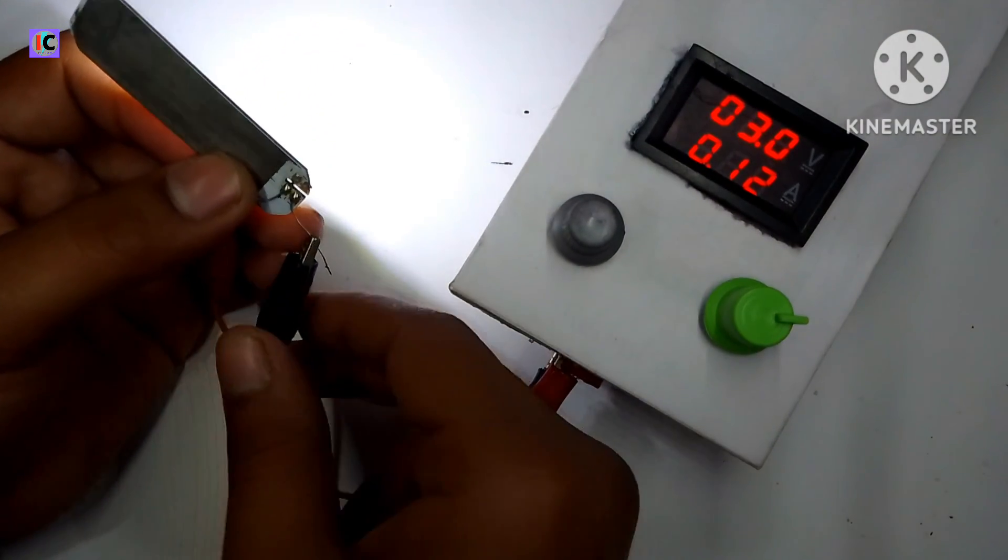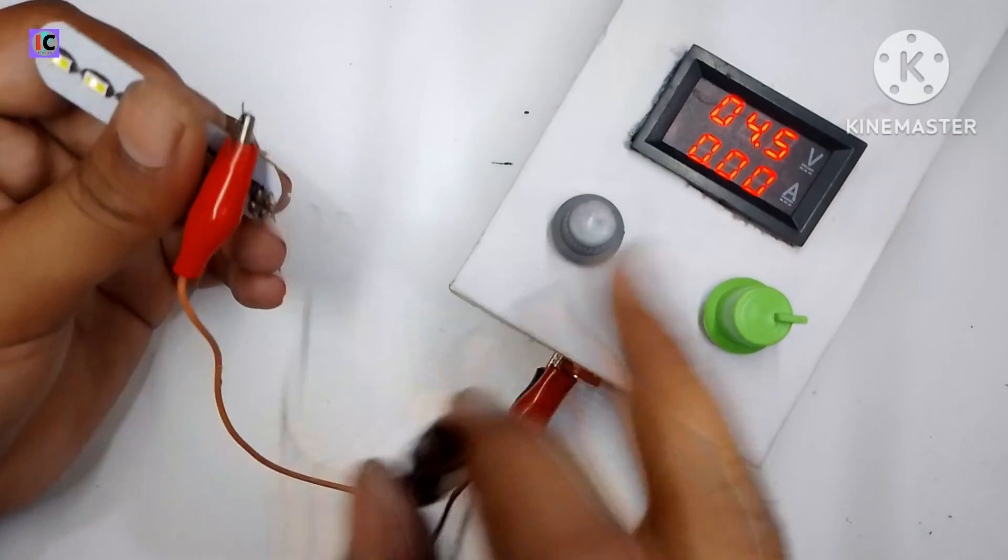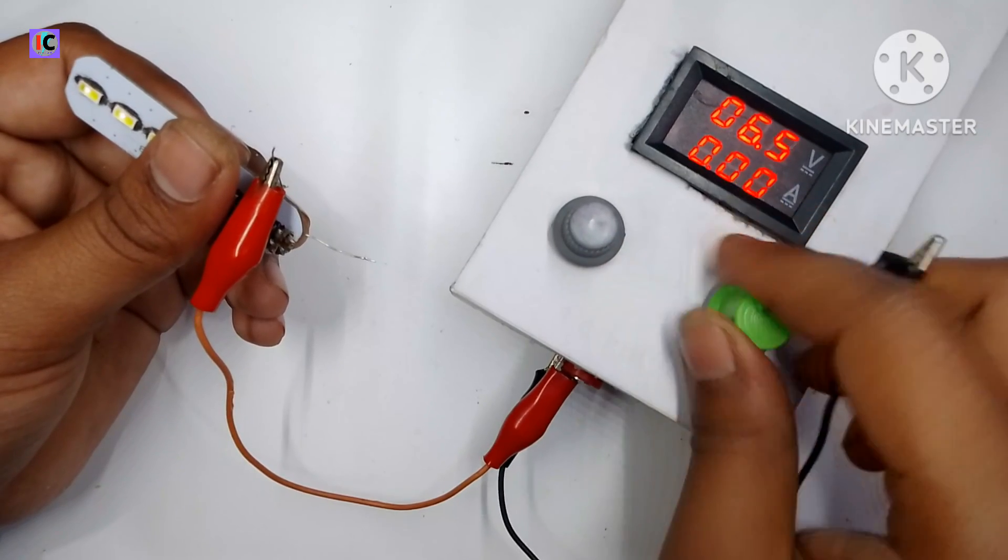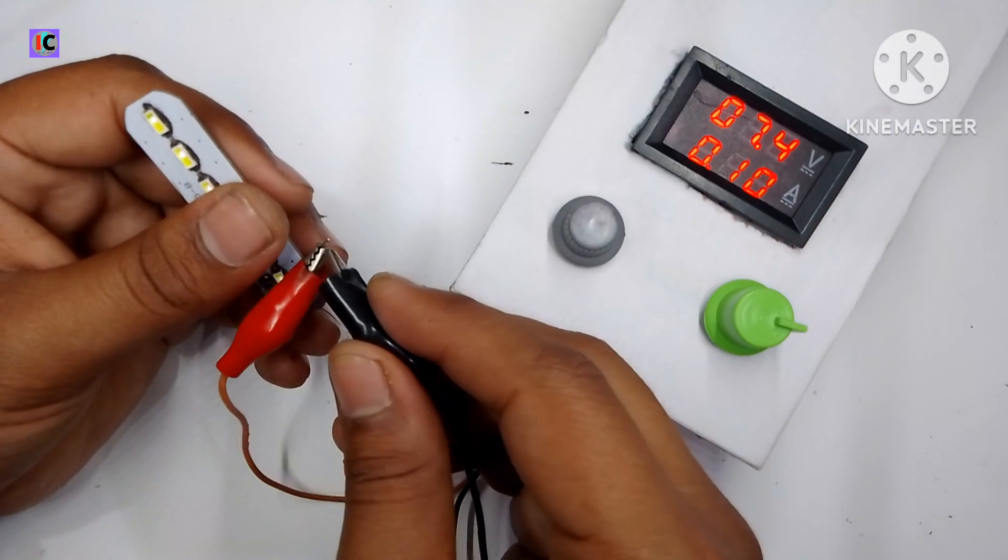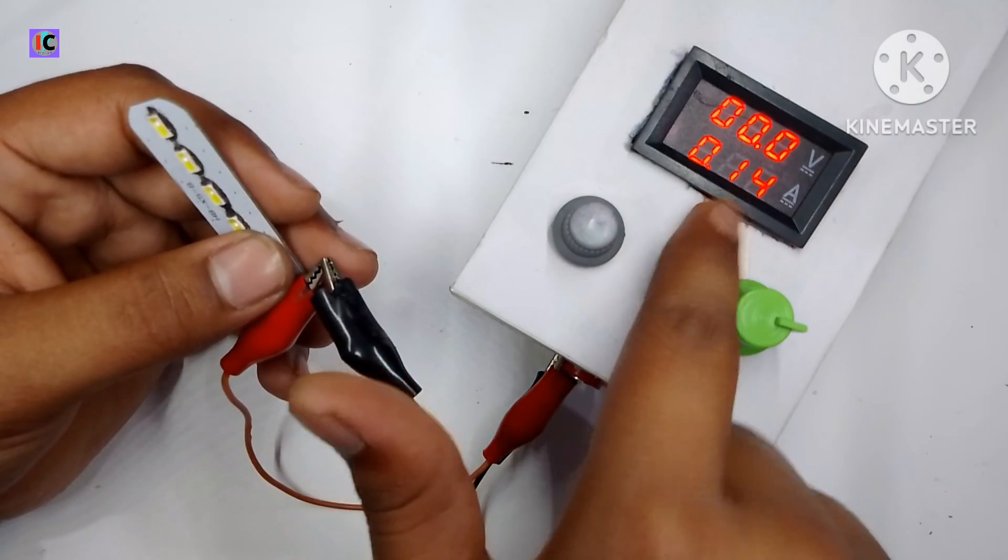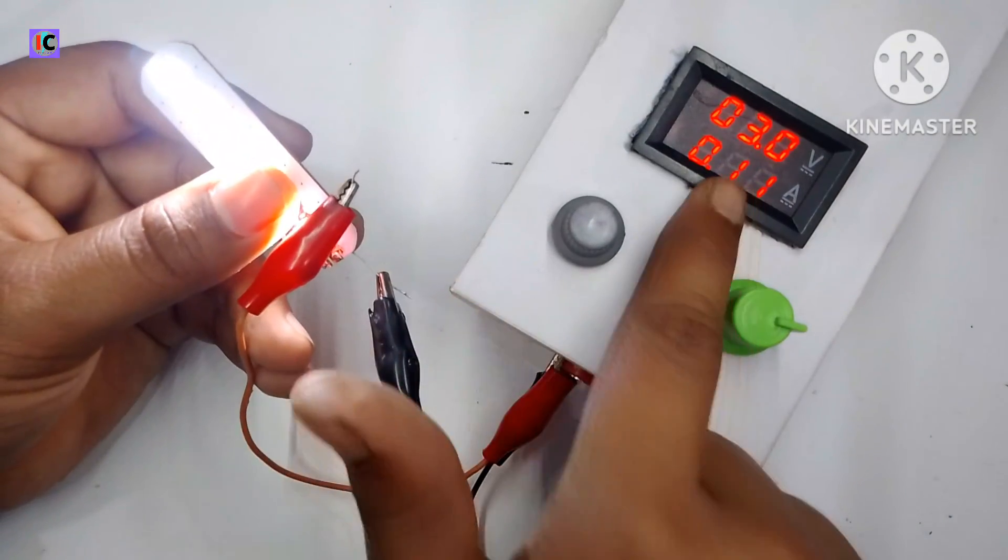So the voltage is constant, but when we drop the current or here you can see I am increasing the output current, the output current limit is fixed at 0.14 ampere which is 140 milliampere. So this is limited by the module.